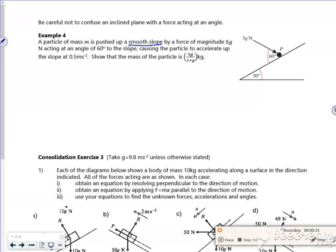I've got mg acting down there at an angle of 30 degrees. So if you look, you have mg that would be 30 degrees, so that would be mg cos 30 acting down and mg sine 30 acting that way.